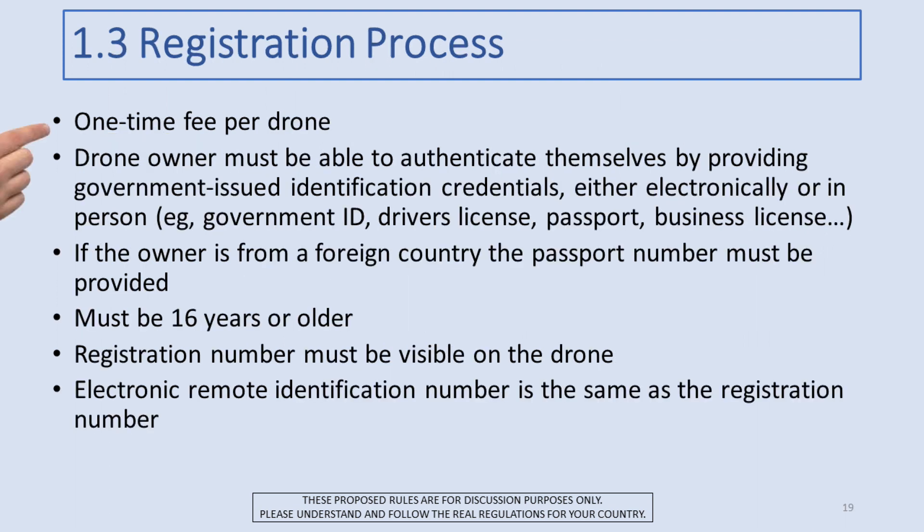The registration process itself should be fairly straightforward — a one-time fee per drone, not a recurring fee, just a one-time fee for each drone you have. The drone owner must authenticate themselves when paying that fee by providing government-issued identification credentials, either electronically or in person — things like a government ID or driver's license. The method will vary a little from country to country. The method we have in Canada actually works really well — you authenticate yourself either with a government ID or through your banking system.